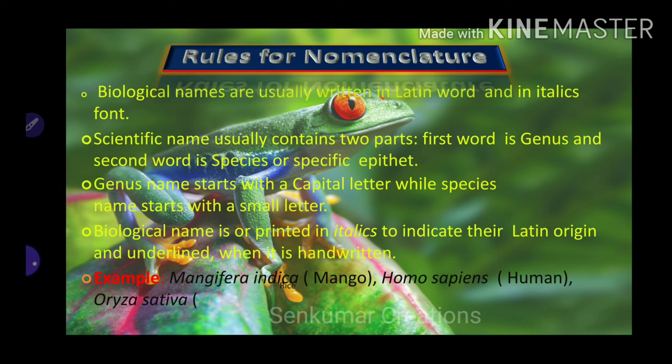Examples: Mangifera indica is the biological name for mango. Homo sapiens for human. Oryza sativa for rice. And Triticum aestivum for wheat.